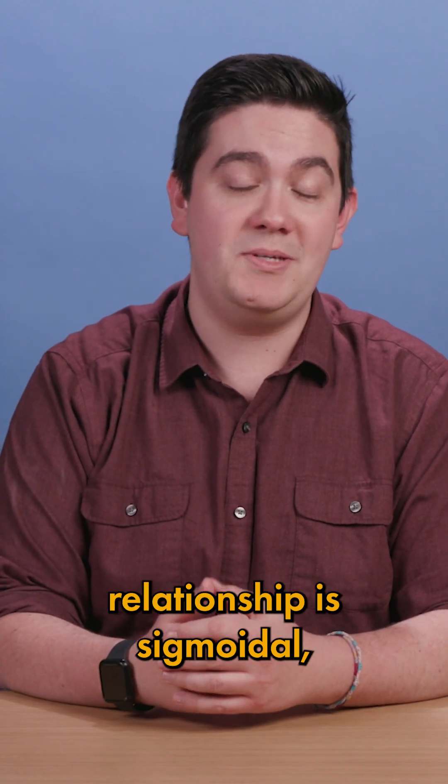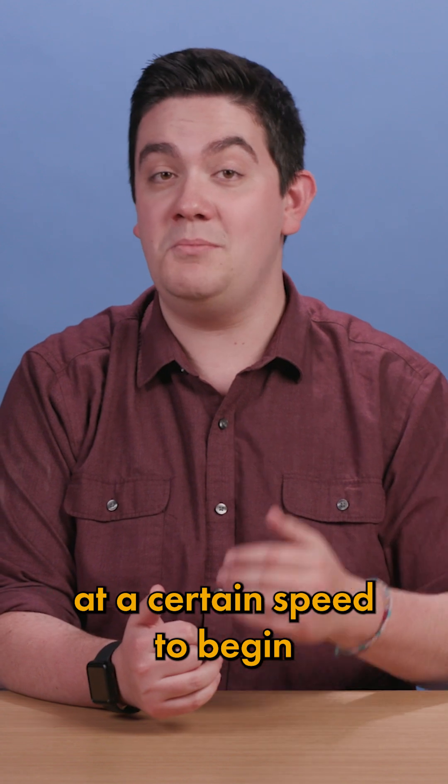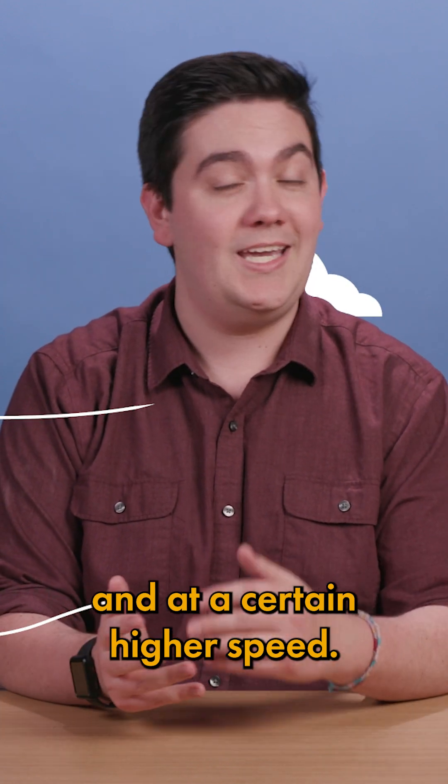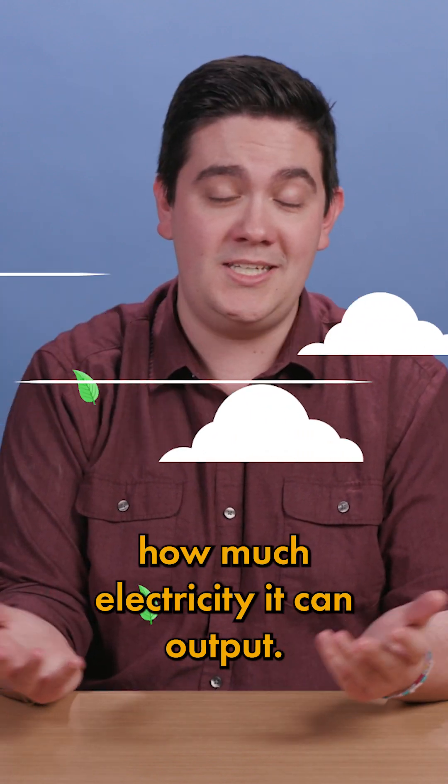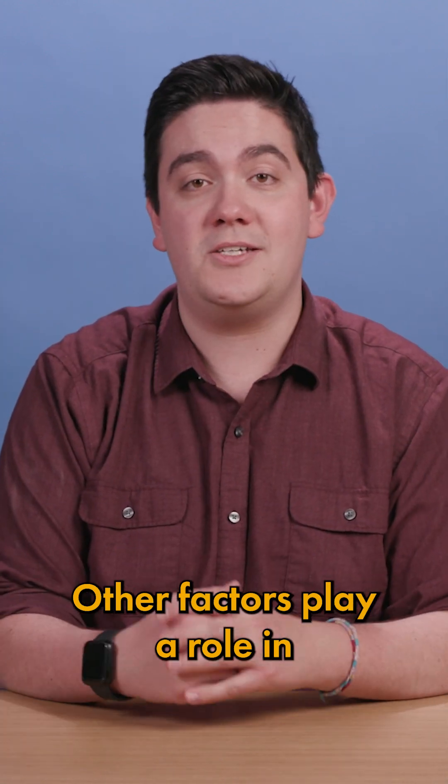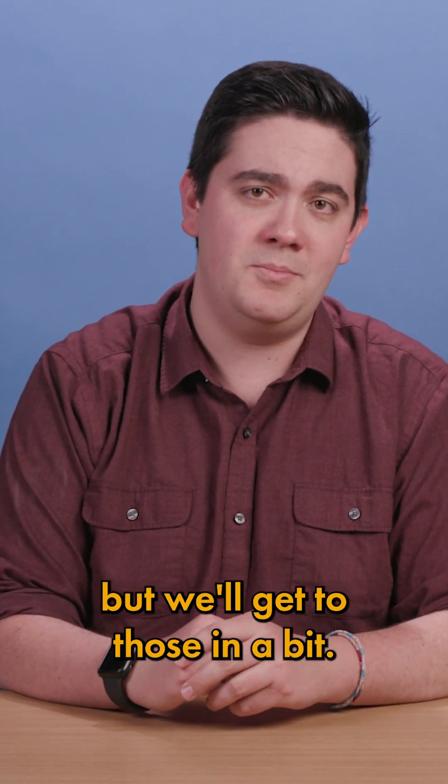We can assume this relationship is sigmoidal since the wind needs to be at a certain speed to begin pushing the wind turbine's blades, and at a certain higher speed, the generator maxes out how much electricity it can output. Other factors play a role in how much power a wind turbine puts out, but we'll get to those in a bit.